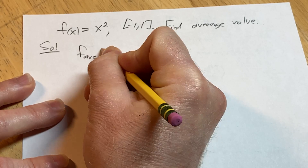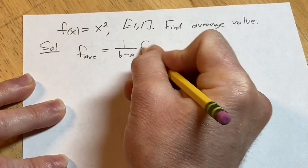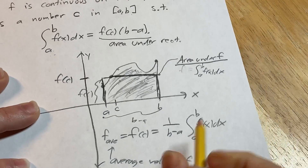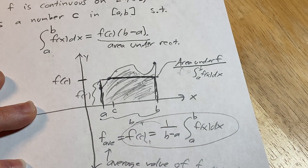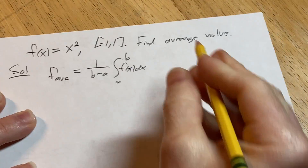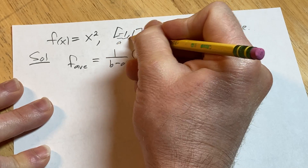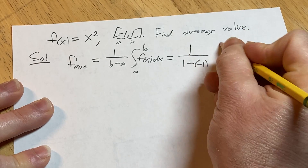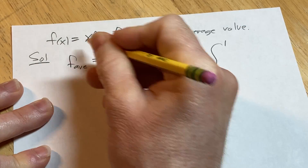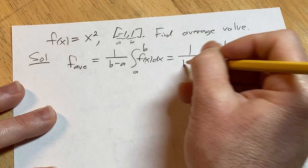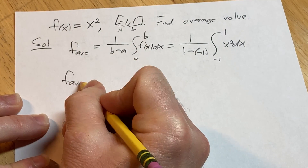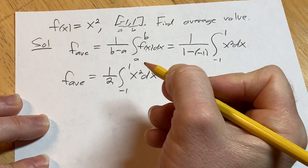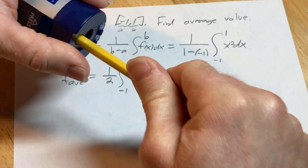The average value of a function equals 1 over (b minus a) times the integral from a to b of f(x) dx — the same formula as f(c). In this example, a is negative one and b is one, so this equals 1 over (1 minus negative 1) times the integral from negative one to one of x² dx. Since 1 minus negative 1 equals 2, we get 1/2 times the integral from negative one to one of x² dx.